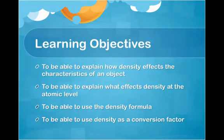So first, let's go over a quick list of the learning objectives. First of all, your job is to be able to explain how density affects the characteristics of an object. Some objects have high densities, some objects have low densities. How are those going to appear different to you as the observers?